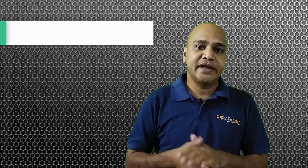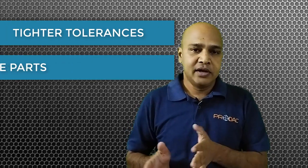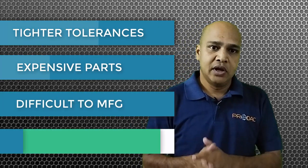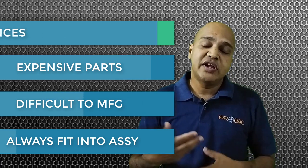For example, if we consider the same assembly which we considered for RSS case, now if we do the analysis you will surely be getting the tighter tolerances as the result. Tighter tolerance means more expensive parts, part cost increases in the worst-case.